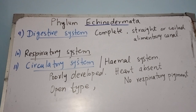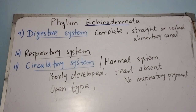The circulatory system (blood vascular system) of echinoderms is also known as the haemal system. It is poorly developed and of the open type. The heart is absent and there is no respiratory pigment. Circulation of nutrients mostly takes place through the water vascular system.